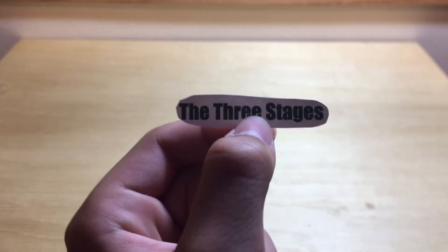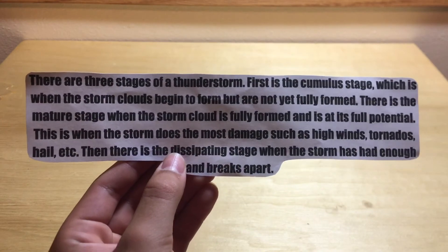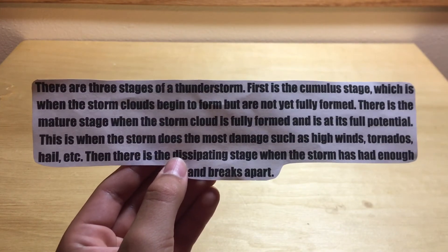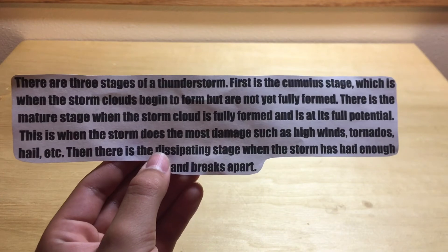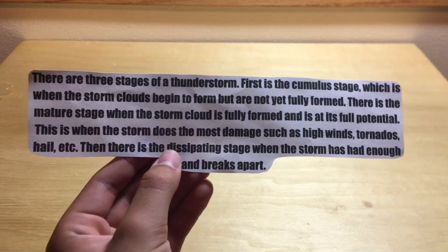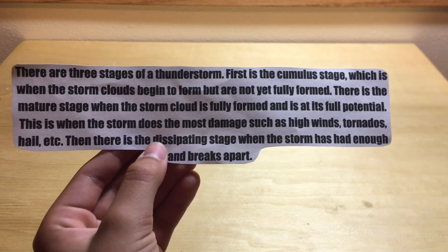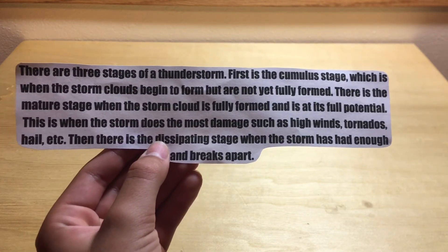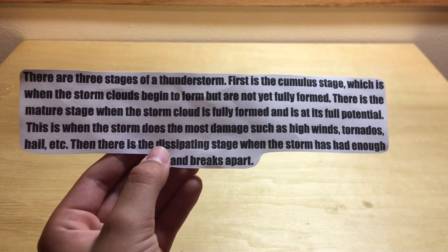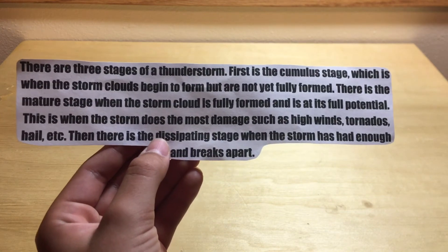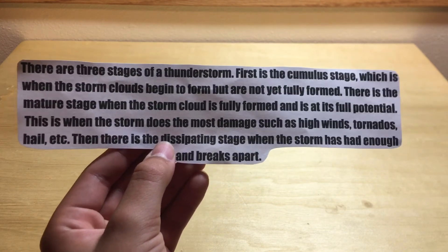The Three Stages. There are three stages of a thunderstorm. First is the cumulus stage, which is when the storm clouds begin to form but are not yet fully formed. There is the mature stage, when the storm cloud is fully formed and is at its full potential. This is when the storm does the most damage, such as high winds, tornadoes, hail, etc.